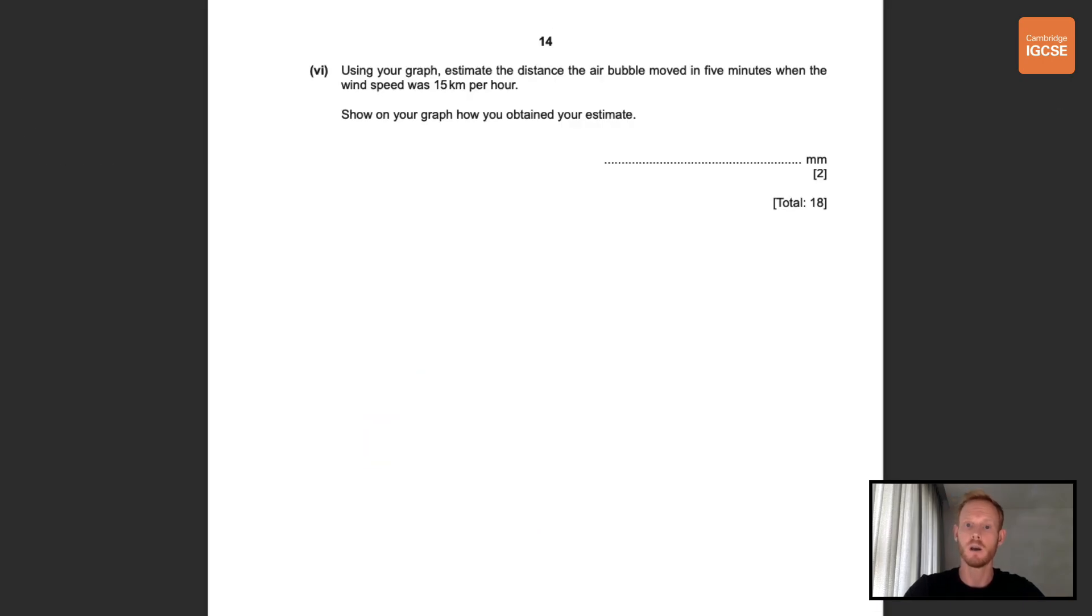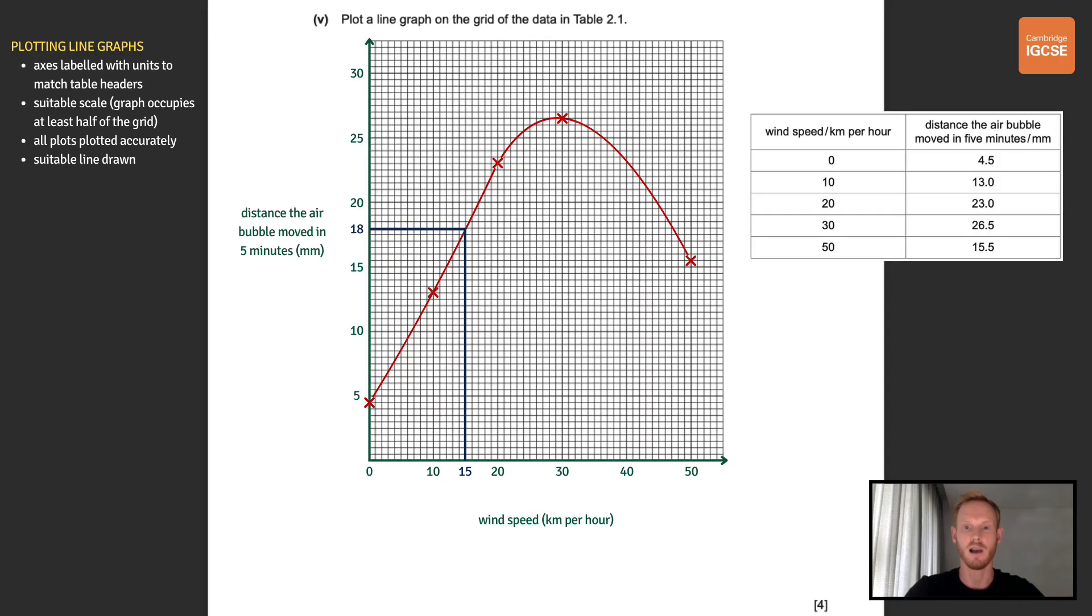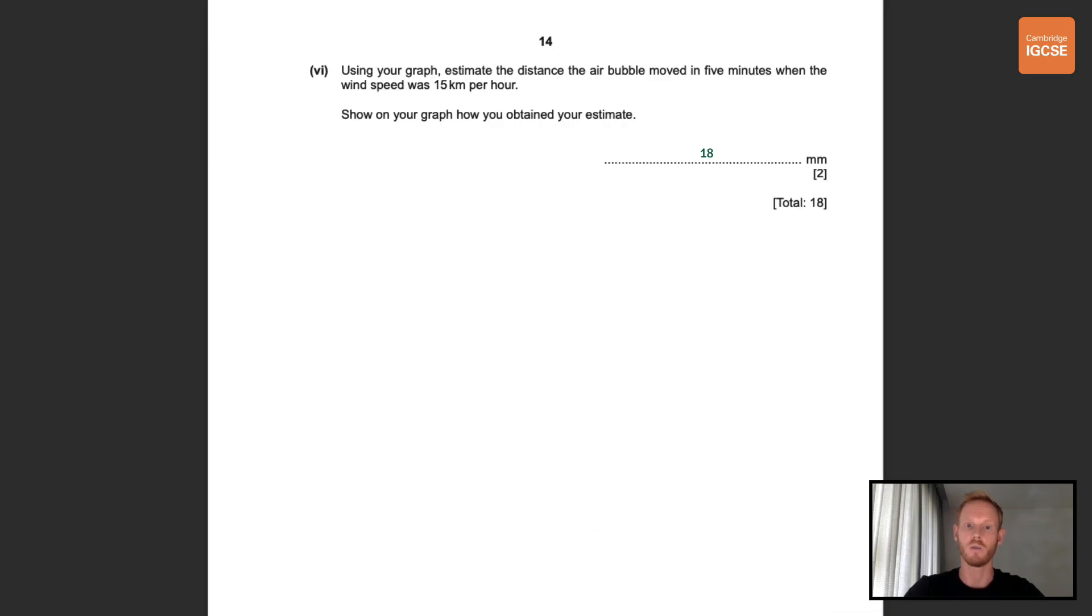Okay final question for this paper is using your graph estimate the distance the air bubble moved in five minutes when the wind speed was 15 kilometers per hour and show on your graph how you obtained your estimate. So one mark for providing an estimate in millimeters and one for indicating on the graph as to where the reading was taken from. So for 15 kilometers an hour draw a line halfway between 10 and 20 on the x-axis and where it intersects with our line is where we take our estimate from. Okay well done that was everything for this IGCSE Biology Paper 6 breakdown. Leave a thumbs up if you benefited from this video and remember to subscribe if you want to be notified as soon as I upload the next one.